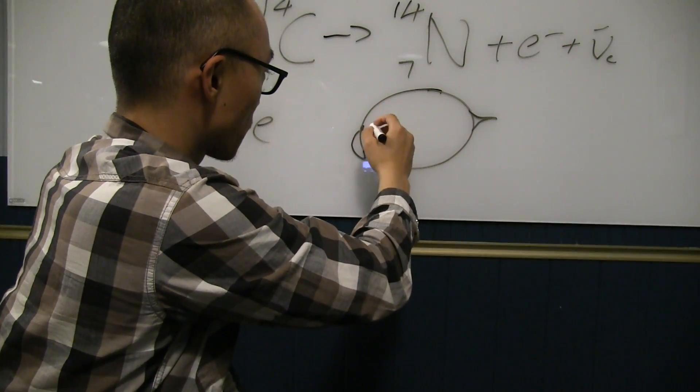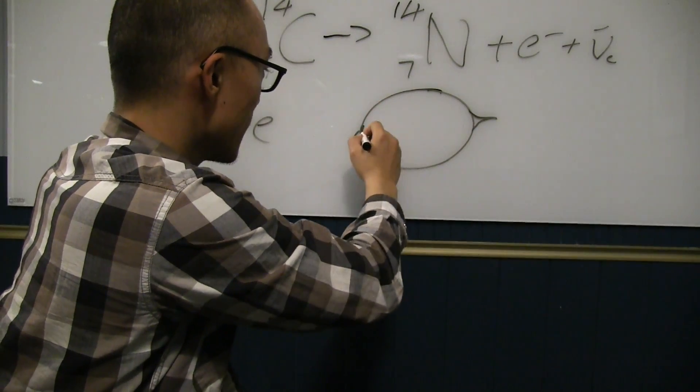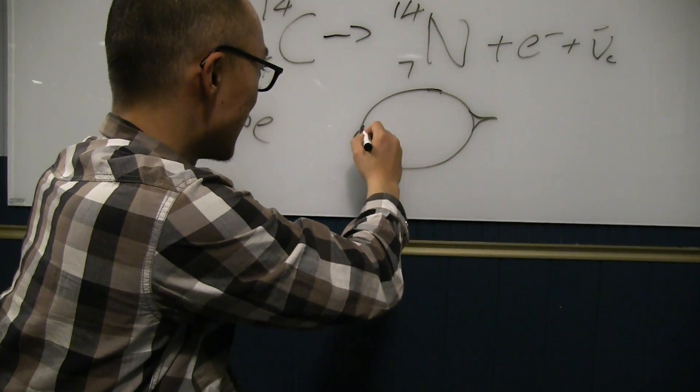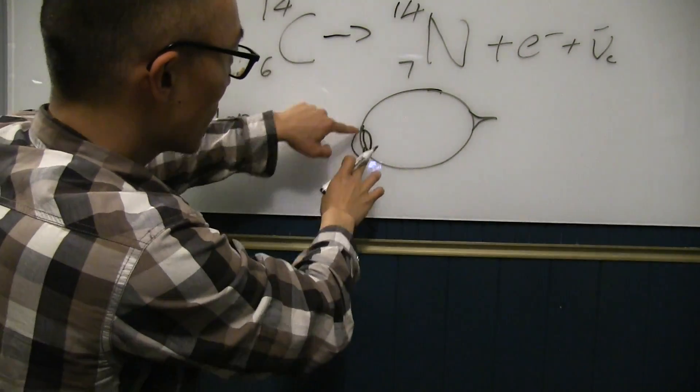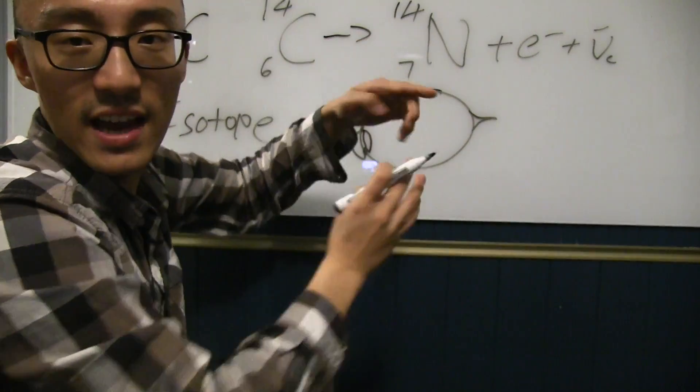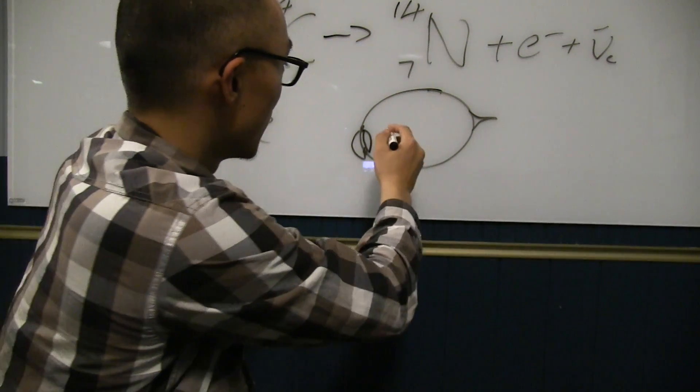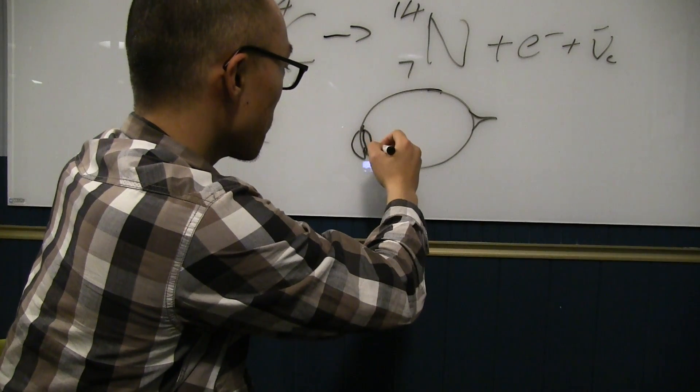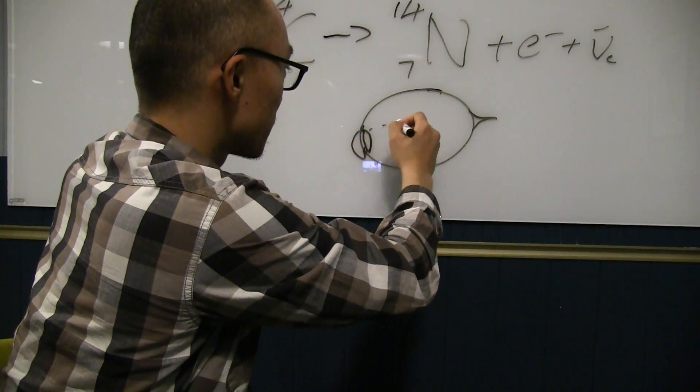And then, so the cornea and the iris, and then you've got something called the lens, right? This is what focuses. So the cornea and the iris and the lens work together to make things in focus. And then, everything gets focused. The light gets focused.